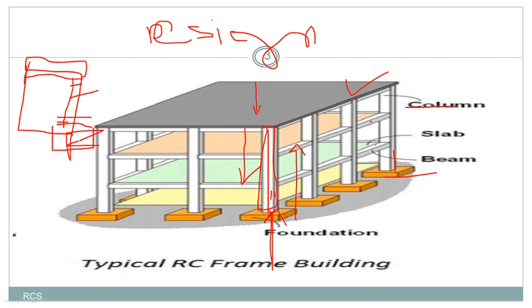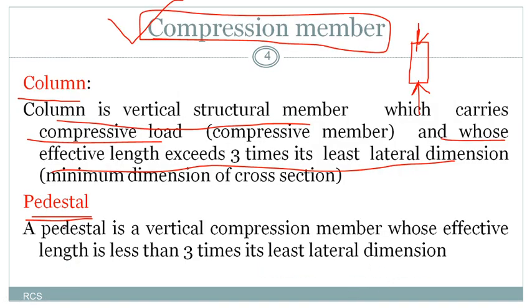Here you can see this is a column in your actual structure. It is subjected to compressive forces, that's why I can call it a compression member. When do you call it a column and when a pedestal? There is a condition: if you want to say it is a column, it should satisfy the condition whose effective length exceeds three times its least lateral dimension.